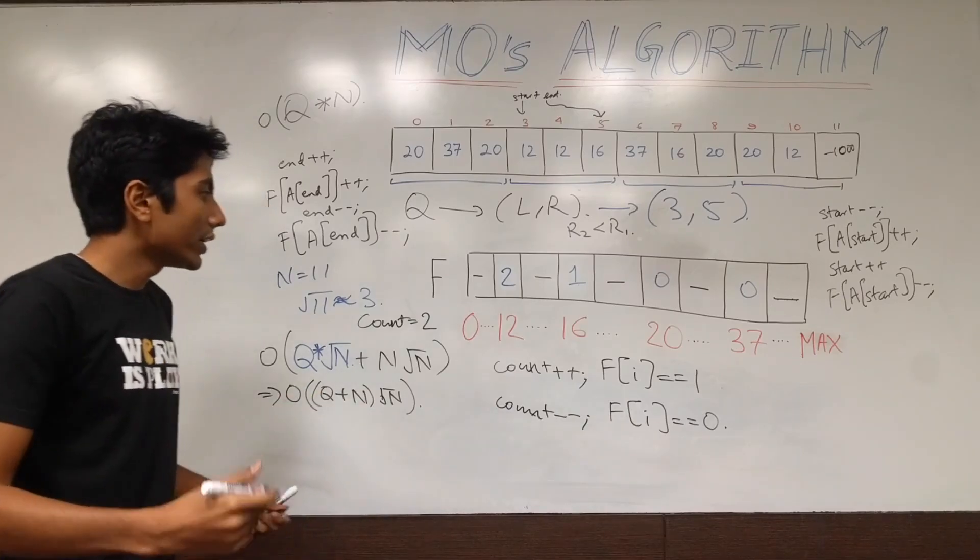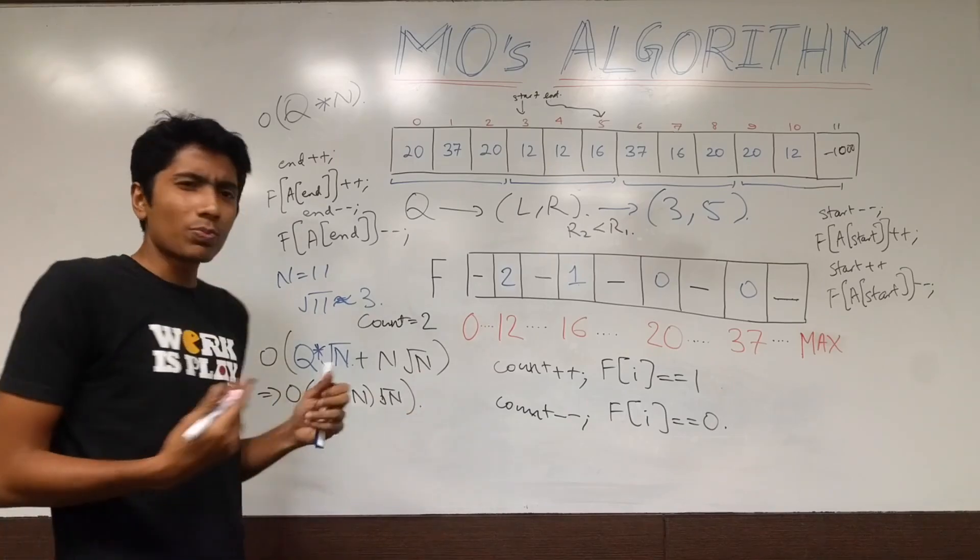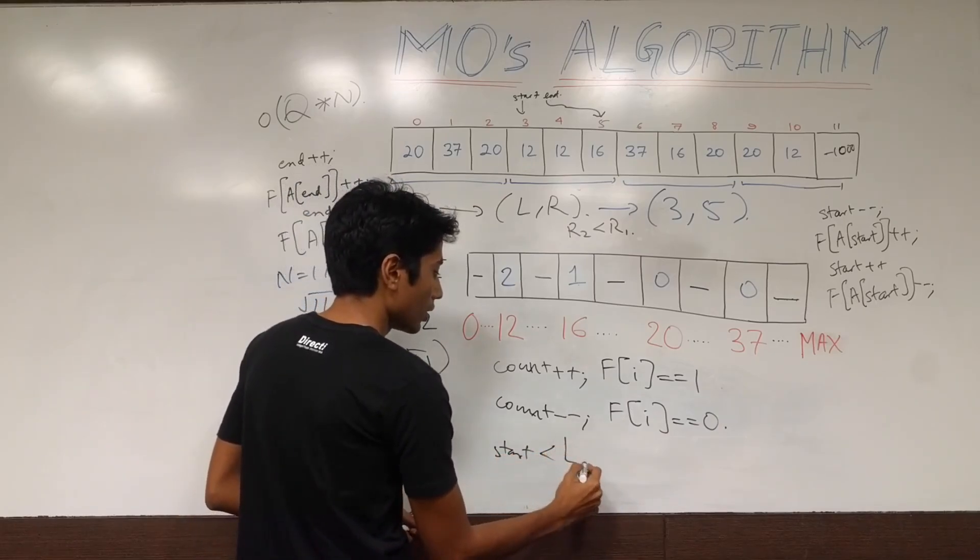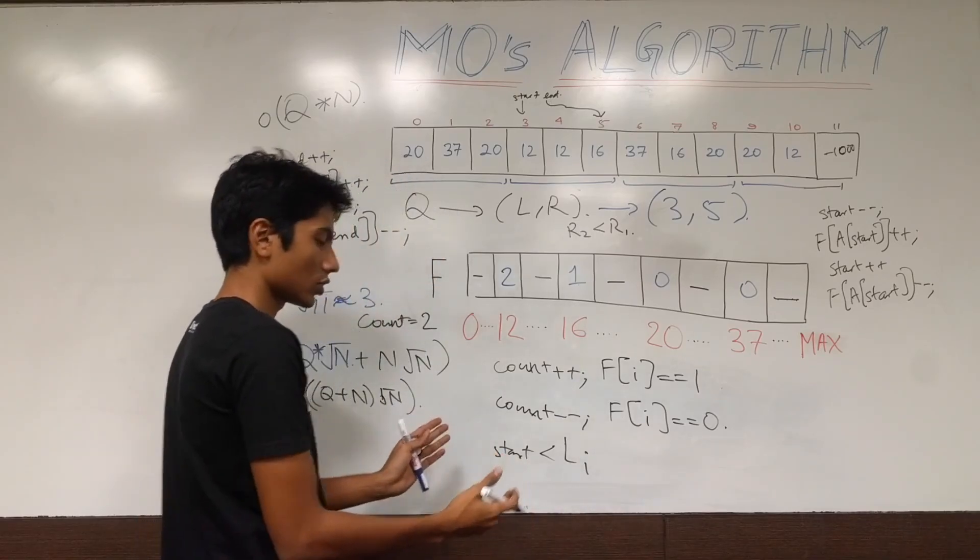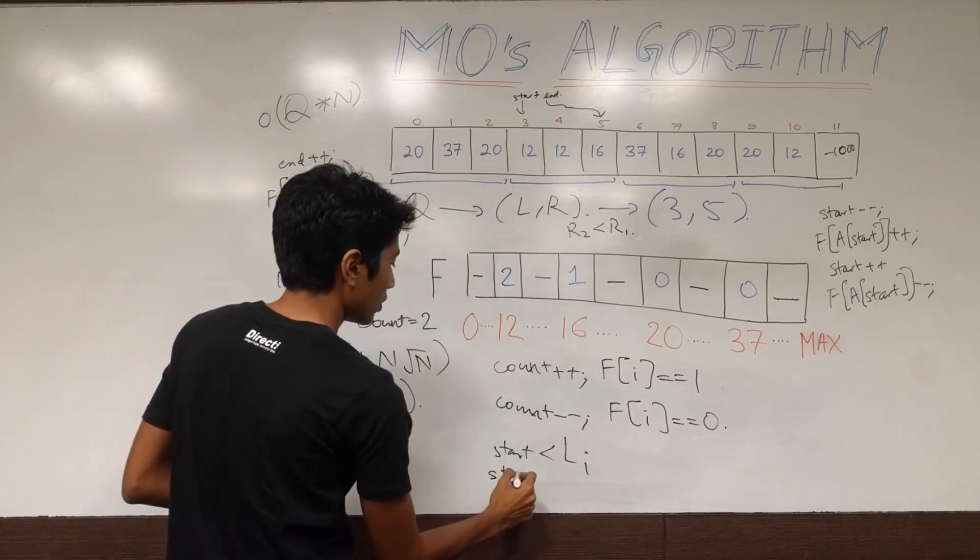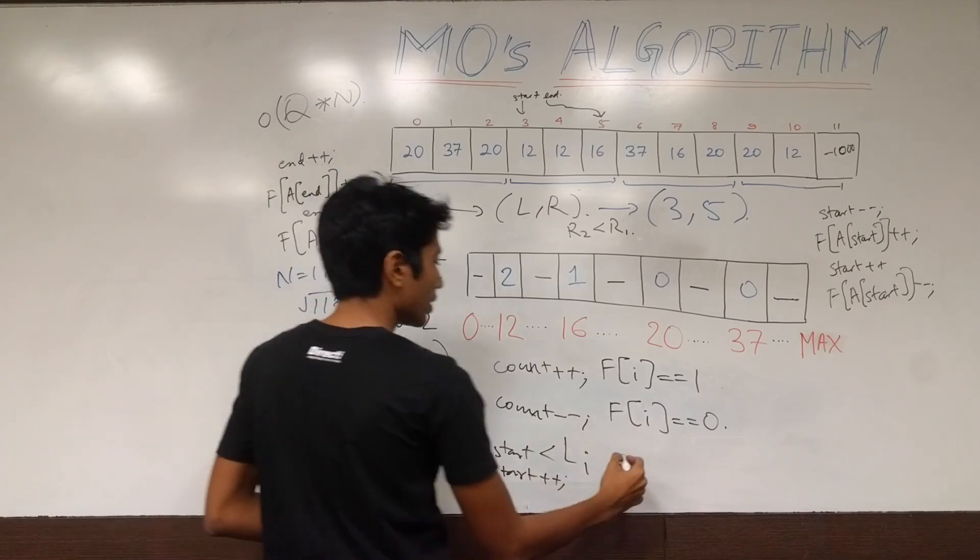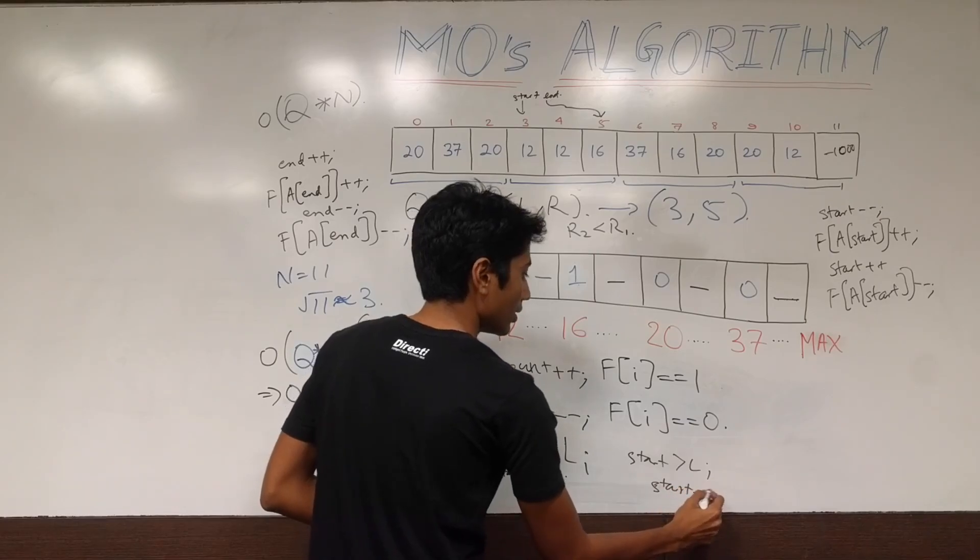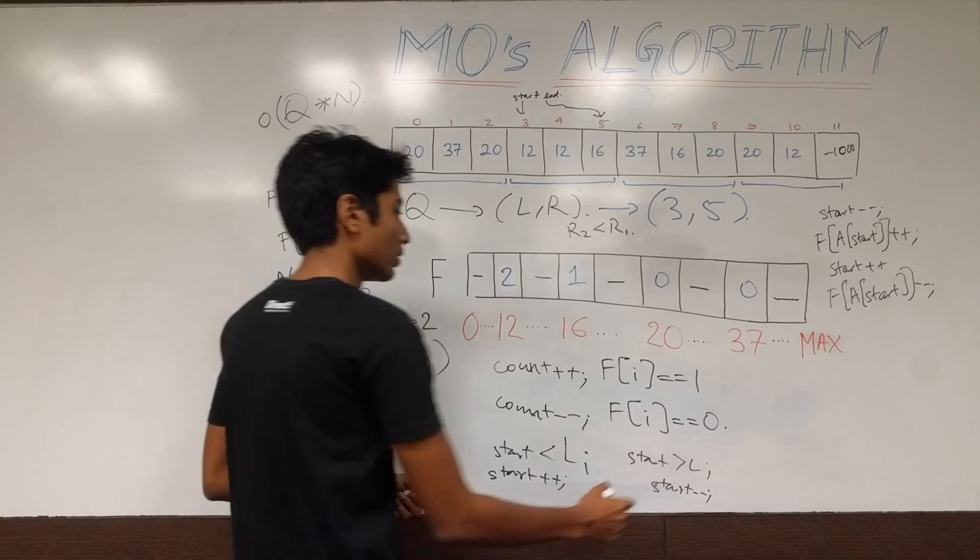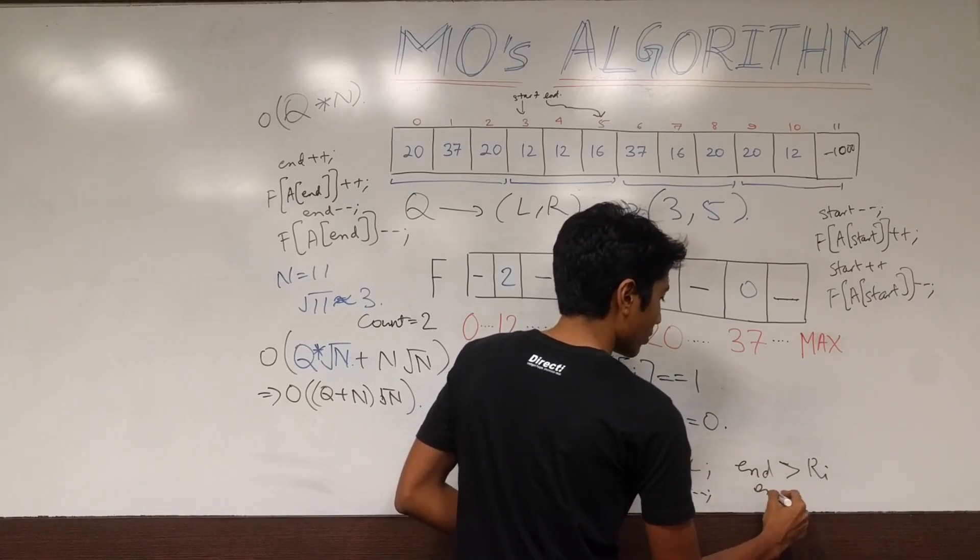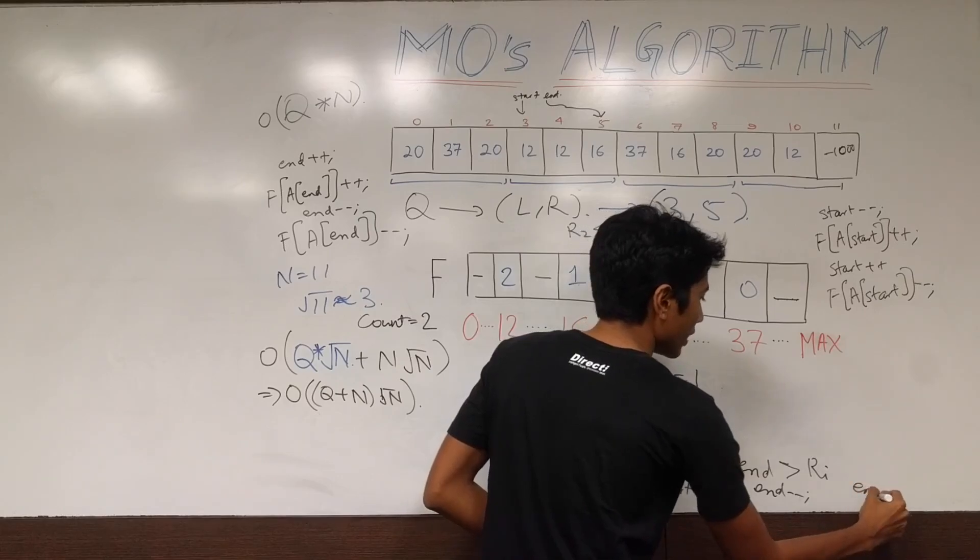And, yeah, all you need to do now is maintain the start and end pointers. That's pretty logical if start is less than L of I. So, if your start is somewhere over here and you need to get here, then you need to increment start. On the other hand, if start is greater than L of I, then decrement start. Yeah. Similarly for end, if end is greater than R of I, then decrement end, otherwise increment end, assuming of course that end is less than R of I.